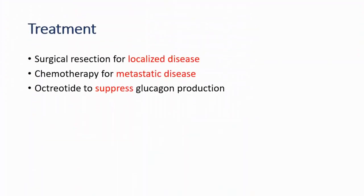For treatment, in localized disease we can use surgical resection. For metastatic disease — meaning spread around the body — we can use chemotherapy. We can also use octreotide to suppress glucagon production, because glucagon levels are very elevated in this disease.